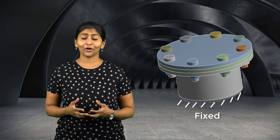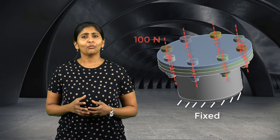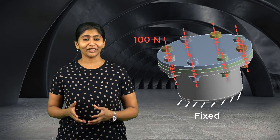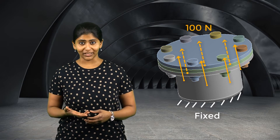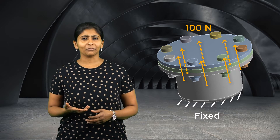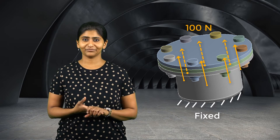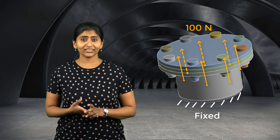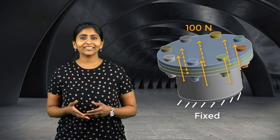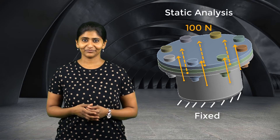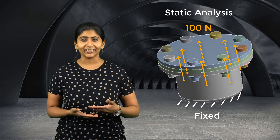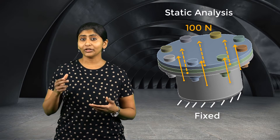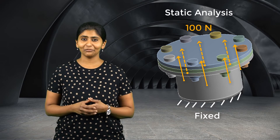We will fix the bottom vessel and use a bolt preload of 100 N in each bolt. A bolt pretension object is used to define the preload. We will then apply 100 N force on the top plate to mimic the force applied by the pressurized fluid on the plate. Since there are no inertial effects in the system, we will solve this as a static analysis. We will also perform a parametric study to perform design iterations by varying the bolt diameter and see its effect on the seal performance.